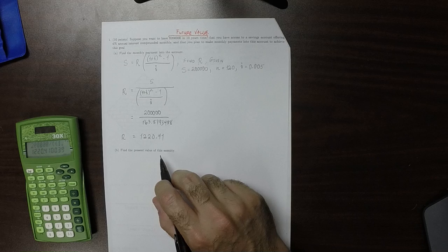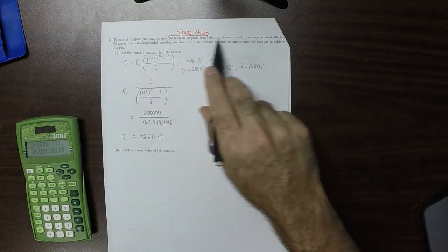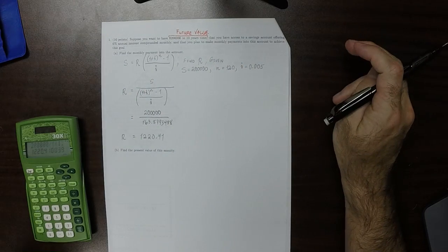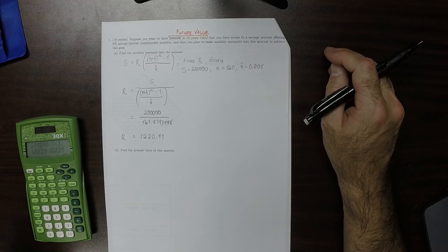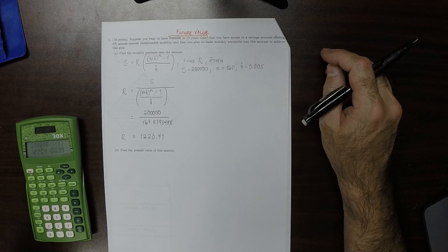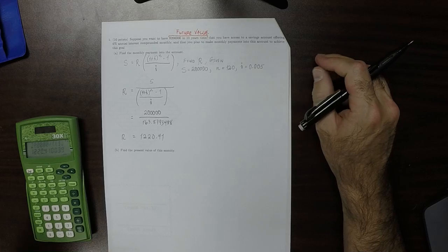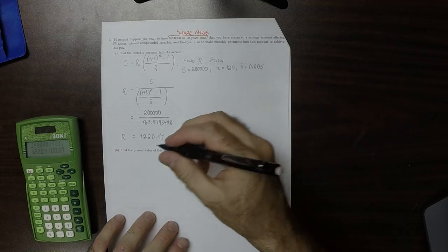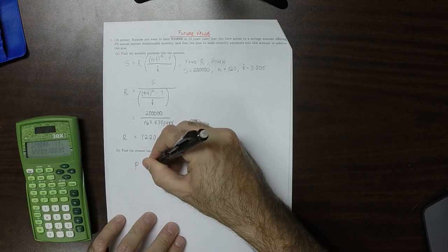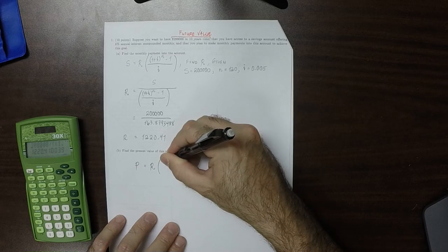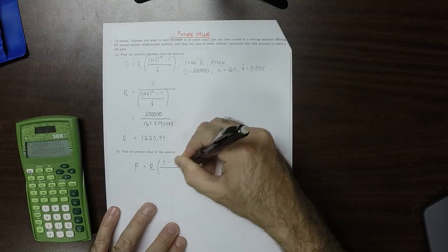Now find the present value of this annuity. Okay, that's equivalent to asking, so the original statement is saying we want to make monthly payments so that we'll have $200,000 in the future, at some future time. Now the question is, well, how much could we put in a bank account exactly now and have $200,000 at that same future time? Okay, so now the formula is P is R multiplied by 1 minus 1 plus i to negative n and then over i.